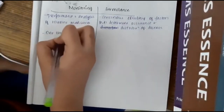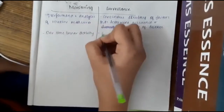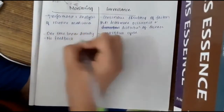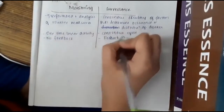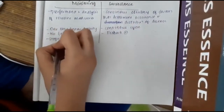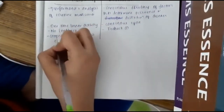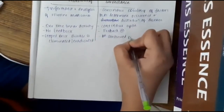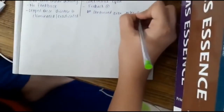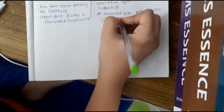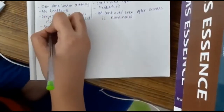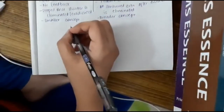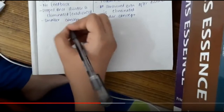Monitoring is a one-time or linear activity done only once, whereas surveillance is a continuous cycle where you trace contacts and their contacts repeatedly. Feedback is present only in surveillance. Monitoring is stopped once the disease is eliminated or eradicated, but surveillance is continued even after disease elimination. Monitoring is a smaller concept whereas surveillance is a broader concept.